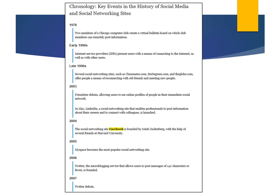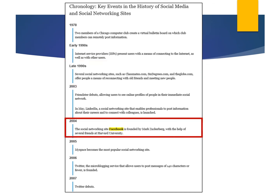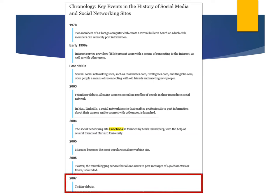And here we have a chronology, or timeline, of key events related to the history of social media. In the late 1990s, social networking sites such as Classmates.com, SixDegrees.com, and TheGlobe.com offered people a way to reconnect. In 2004, Facebook was founded by Mark Zuckerberg and classmates at Harvard. And in 2007, Twitter debuted.